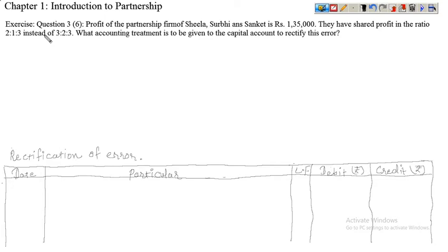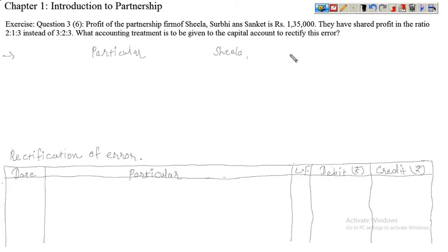First of all, hum logon ko jo sahi distribution hai profit and loss ka, woh dekhna padega. So let's start our question. We set up a table with particulars and the names of the three partners: first is Sheila, another is Surbhi, and the third one is Sanket.